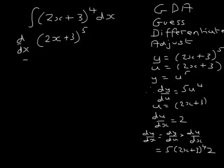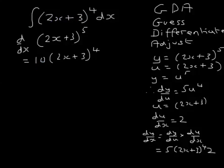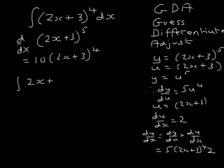Let's put that over here — that equals 10 lots of (2x + 3) to the power of 4. But I've got just 1 lot of (2x + 3) to the power of 4 in the original integral; I haven't got 10 lots of it. So now I can adjust. I've had the guess, I've differentiated to check it, and I now need to adjust. My original guess was (2x + 3) to the power of 5, but that answer is 10 times too big. So the answer to the integral is 1 tenth of my original guess.